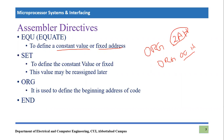Similarly, there is another assembler directive used to define the end of the code. Once you have completed the code, you put END so that the compiler knows: this is the point where I stop translating into machine code. If you write anything after the END statement, it will be considered as a comment.